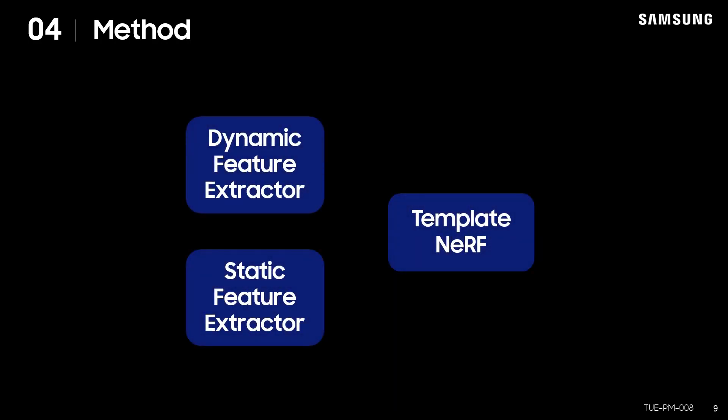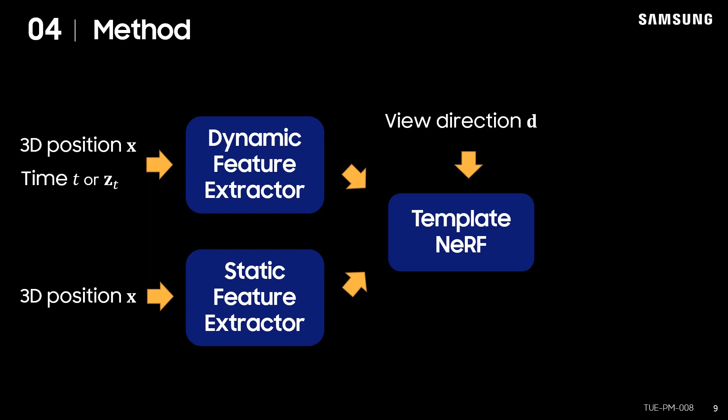Now, let's dive deeper into our method. Our model consists of dynamic and static feature extractors and template NeRF modules. 3D position X and time T or its latent vector ZT are fed to the dynamic feature extractor, while only 3D position X is used as an input to the static feature extractor. Extracted features and view direction information are then fed to the template NeRF that outputs RGB color C and volume density sigma.